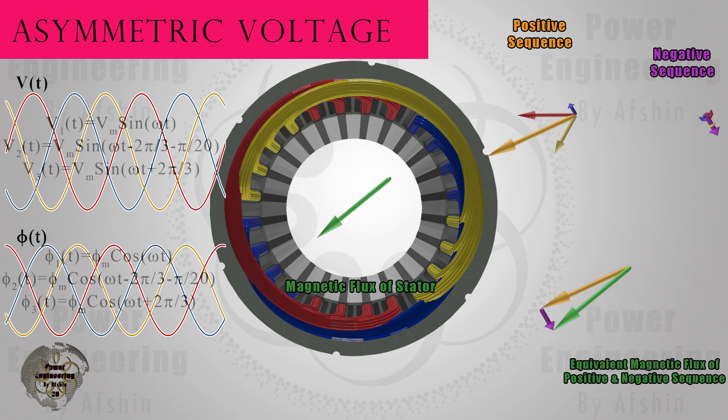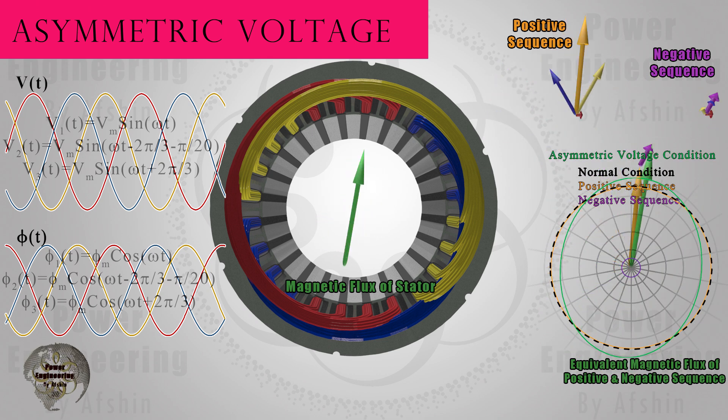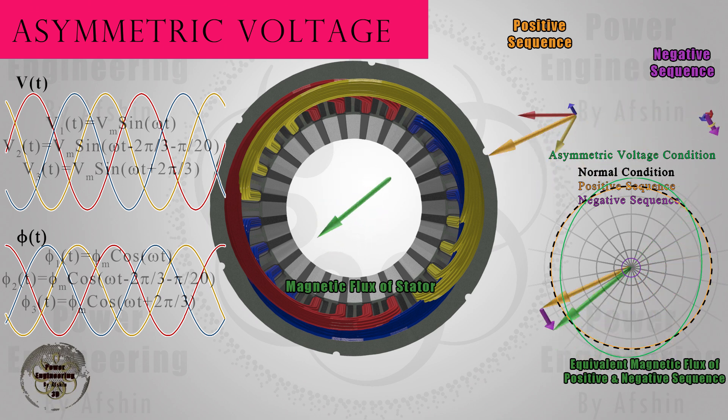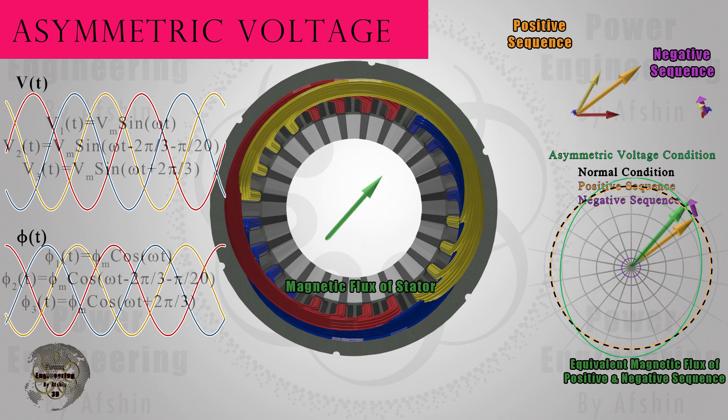However, as mentioned, the zero sequence will not create a rotational magnetic field. The shape of the field has become elliptical. The field shape resembles the previous state where the voltages were unbalanced. You can see the sum of positive and negative sequences in green.